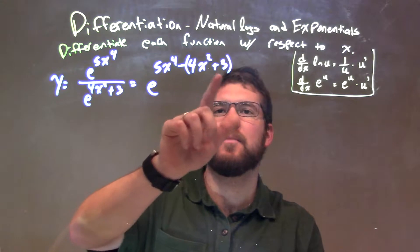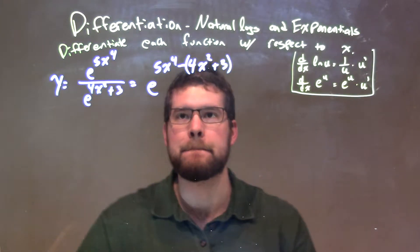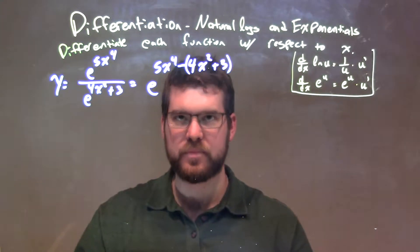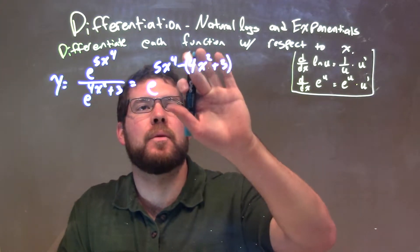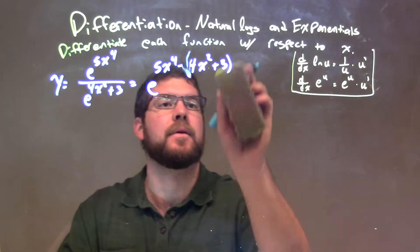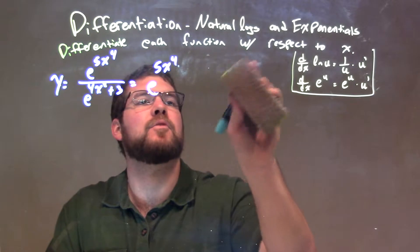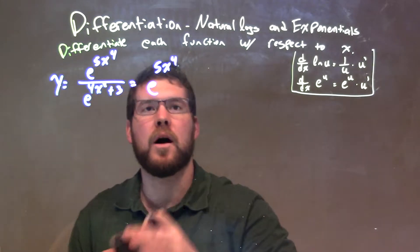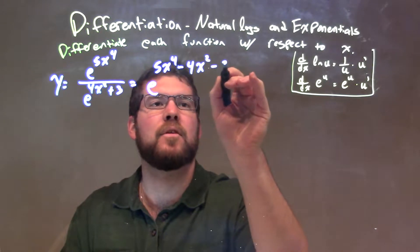Now you can distribute that minus sign and make both of these a minus. So let's do that, that might be a little easier to see. Let's rewrite that here. Let's distribute that minus sign across, we're going to have minus 4x squared minus 3.